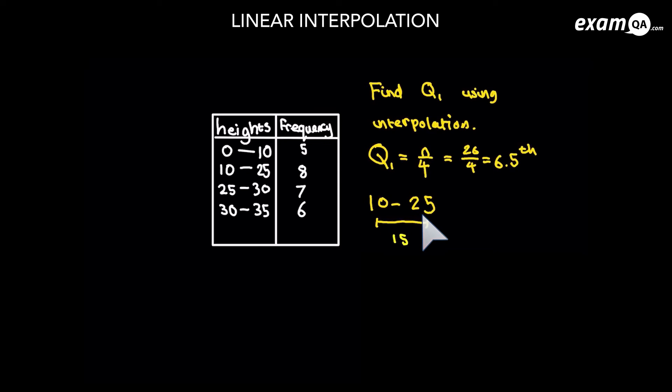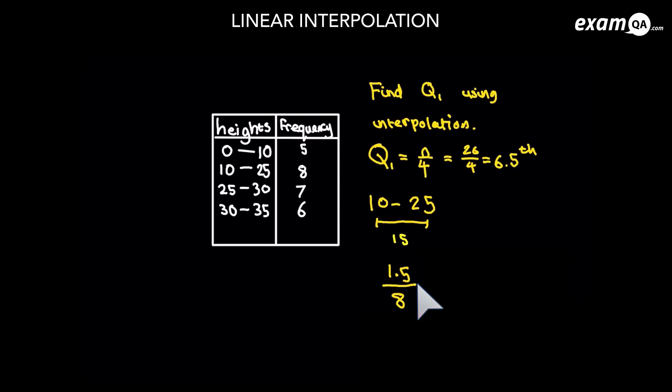So how much into this interval should we go? The frequency in here is 8, and we only want 1.5 of it, so it shouldn't be too far in — it should be quite close to 10, maybe 11 or 12. But of course we can't just guess. How many into the 8 did we want? We went past 5 and looked for the 6.5th number, so we need 1.5 more. We want 1.5 into that 8.